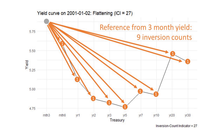For example, the 3-month and the 6-month, then the 3-month and the 1-year, then the 3-month and the 2-year, the 3-month and the 5-year. Every single one of these spreads, we check whether it is inverted or not. Every single time it's inverted, we give a score of 1.